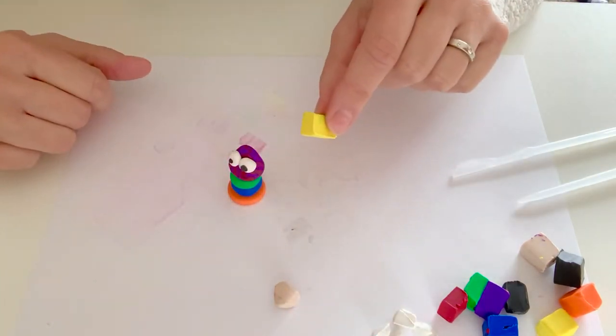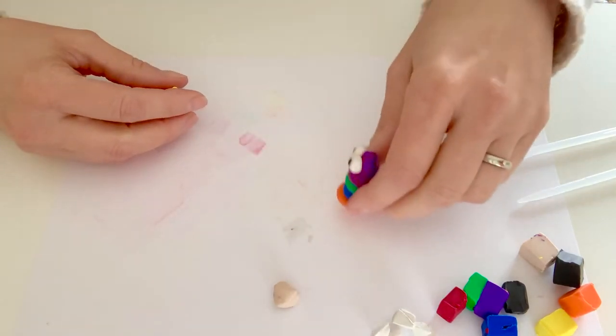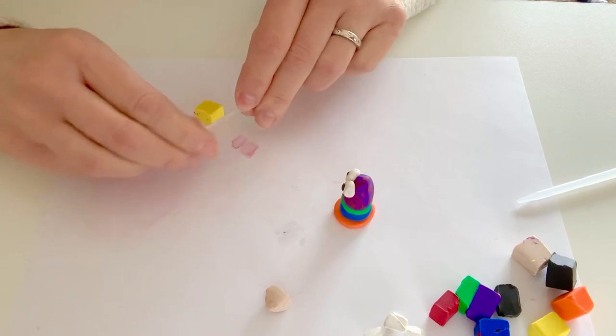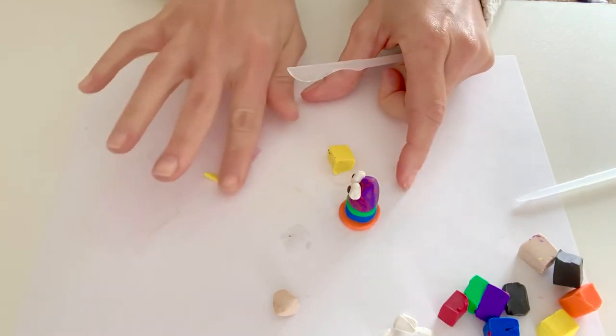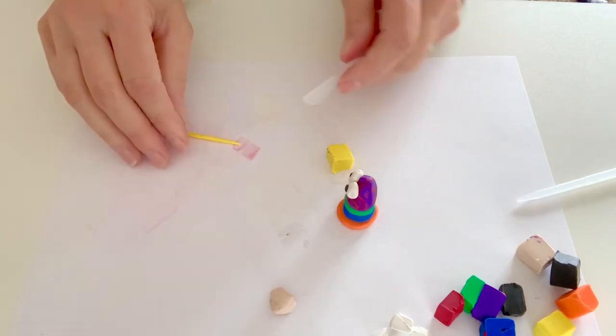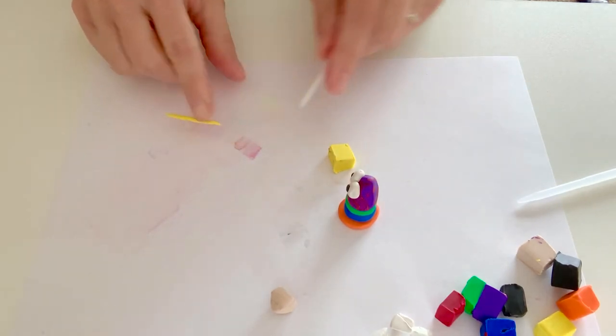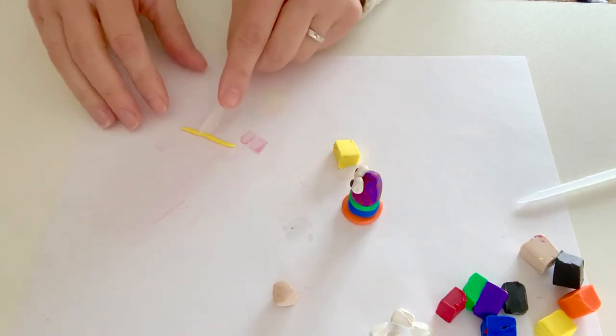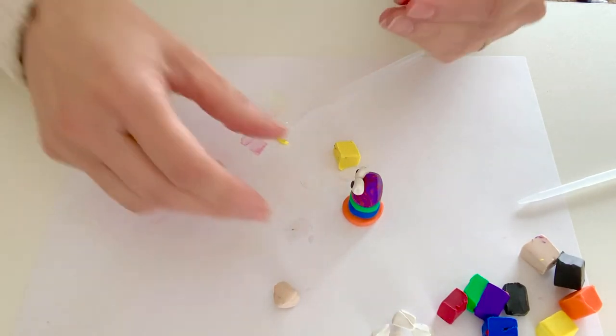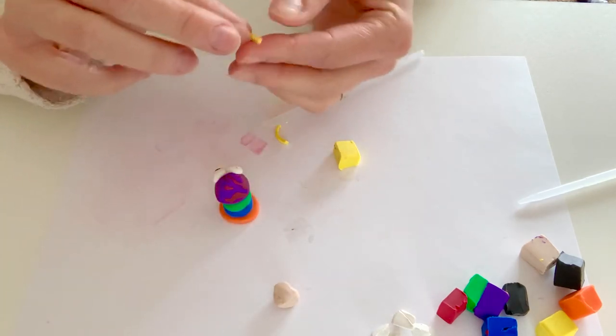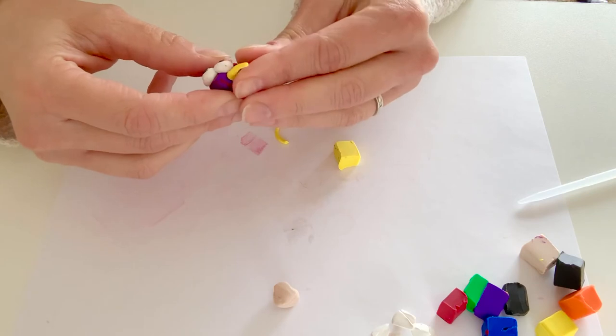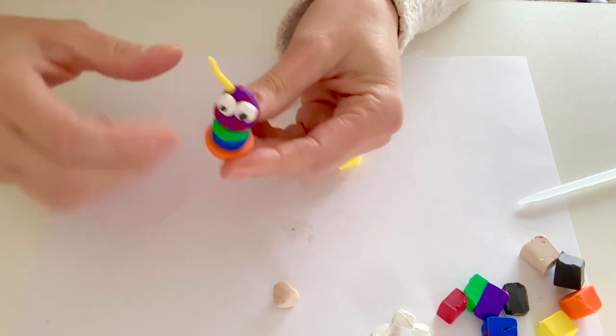And I feel like this guy could use some antennas. So I'm going to make some little antenna for him. So I'm going to cut some yellow and I'm going to roll it into a little snake and cut that in half and attach those at the top.